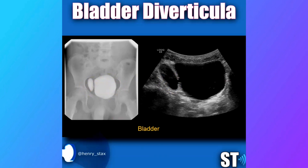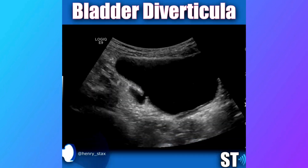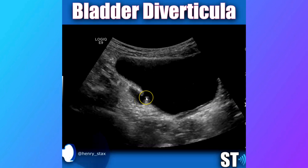Diverticula have been associated with transitional cell carcinoma. If urine stays here for a long time, sediment can build up and a stone can form. Dynamically, as the urinary bladder fills with urine, this pouch can also fill with urine and get bigger and smaller.